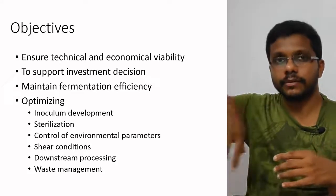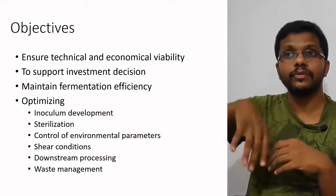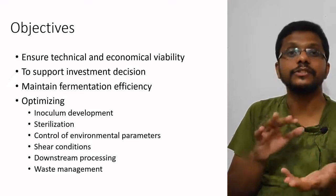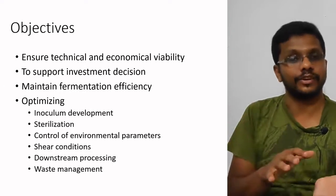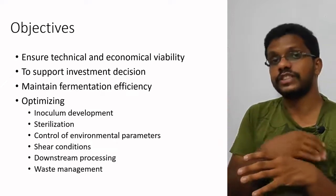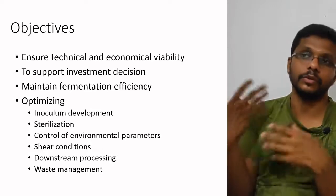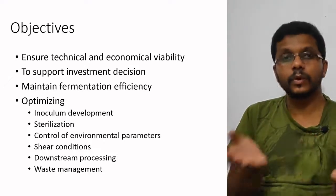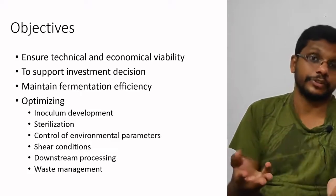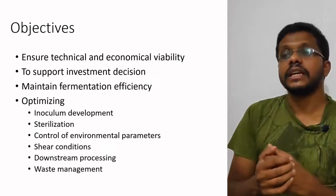Shear conditions are also critical — large fermenters need high mixing to maintain a uniform environment, but increasing agitator speed beyond certain values causes shear stress leading to cell death. Downstream processing methods must also change; for example, chromatography used in the lab may not be feasible at large scale, so continuous centrifugation or extraction methods are preferred. Waste management is a huge issue too — disposing of 20 lakh liters of media output requires a separate dedicated waste disposal plan.